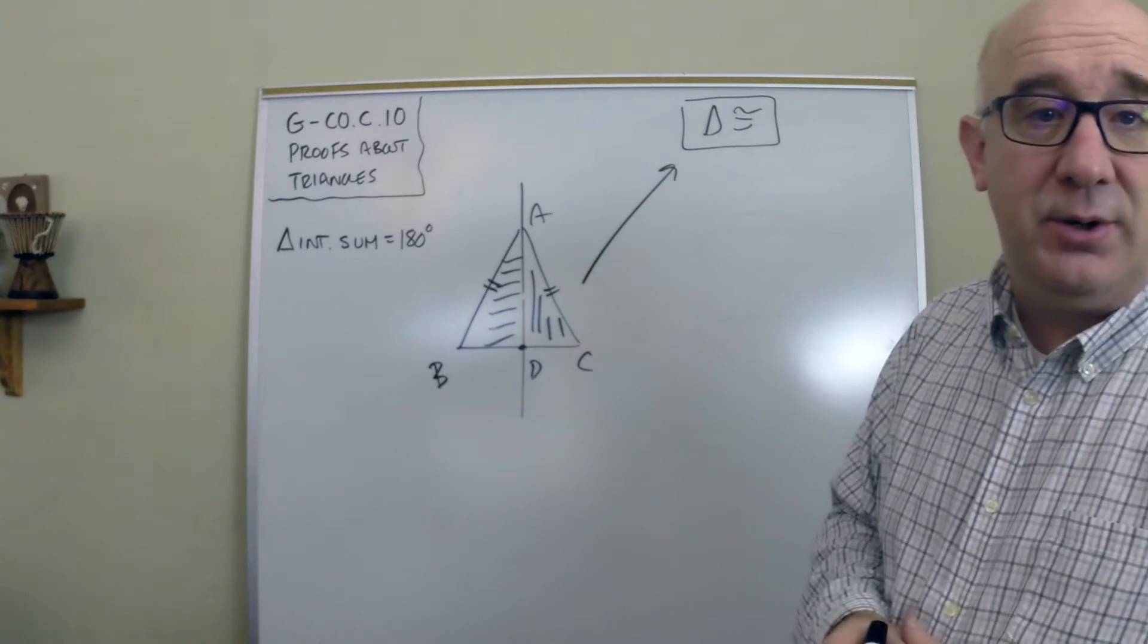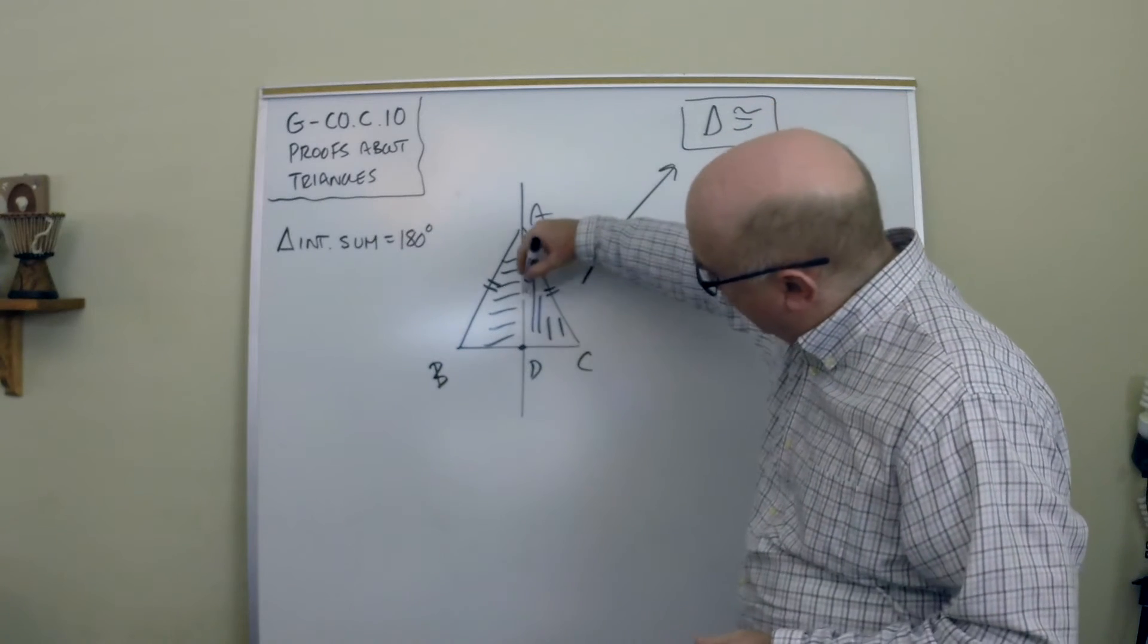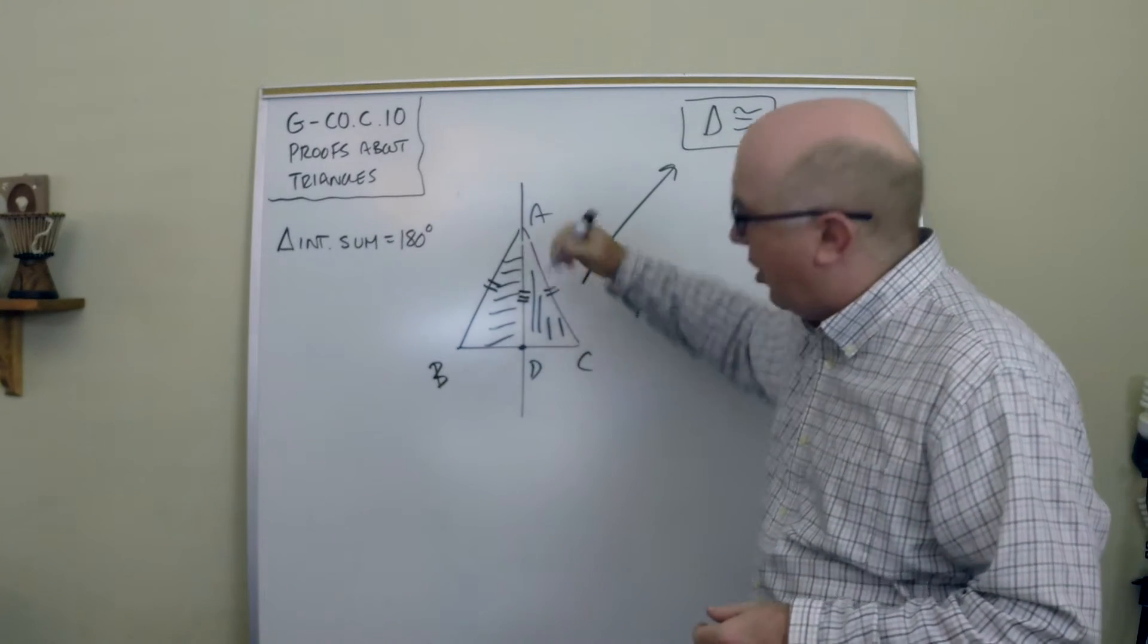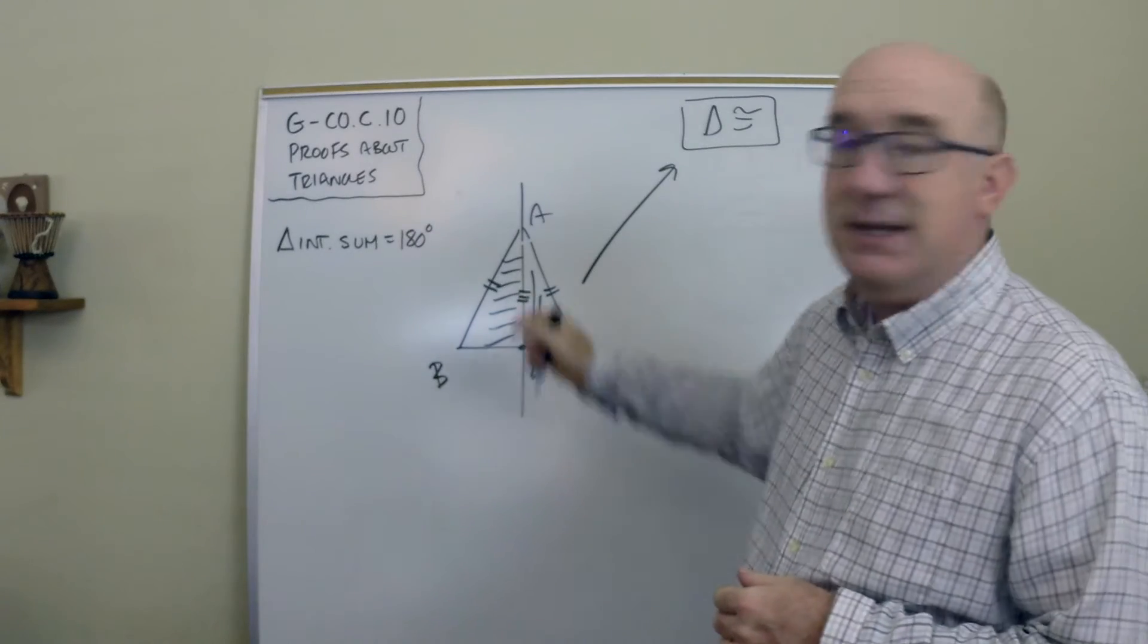Because it's an isosceles, you know you have two sides that are equal. You would know that this here is a common side or what we call the reflexive property that AD would be congruent to AD.